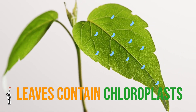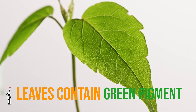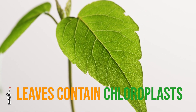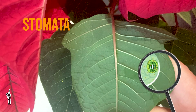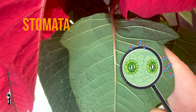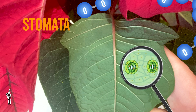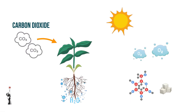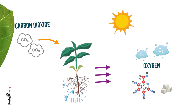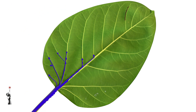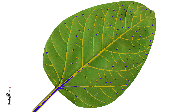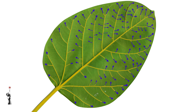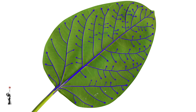Leaves contain many chloroplasts that contain chlorophyll, the green pigment that captures the light energy for photosynthesis. Leaves have microscopic openings called stomata on their undersides. These openings allow carbon dioxide to enter the leaves and oxygen to exit — carbon dioxide is needed for the reaction and oxygen is produced during it. Leaves also have a network of veins that transport water and nutrients from the roots to the leaf cells and carry away the products of photosynthesis.